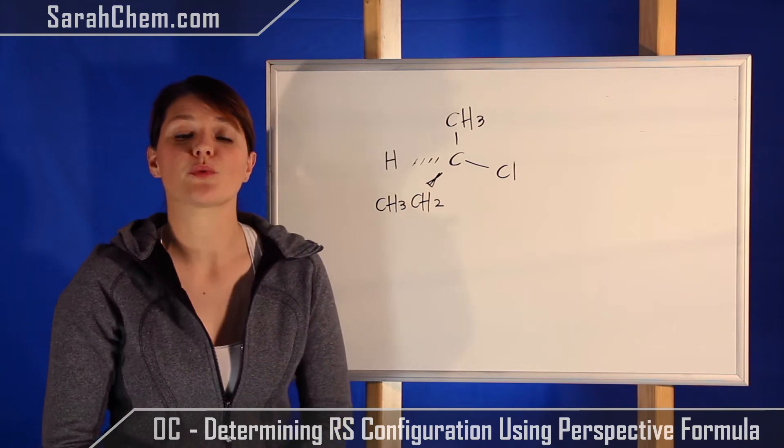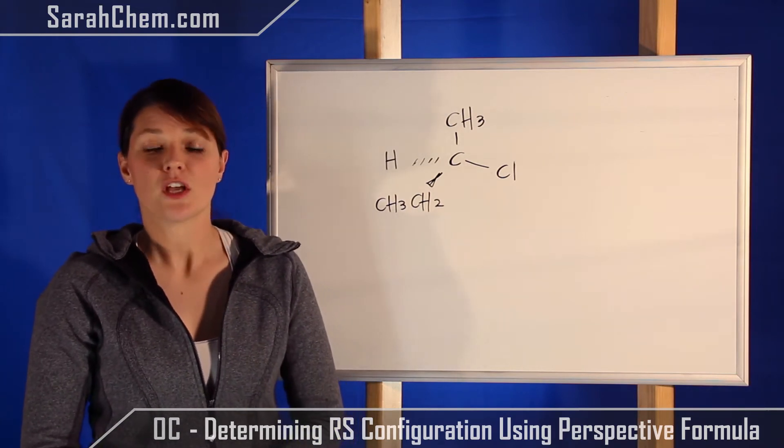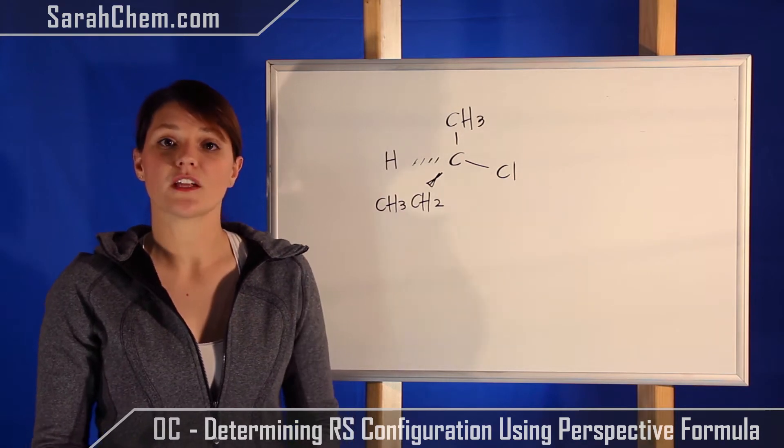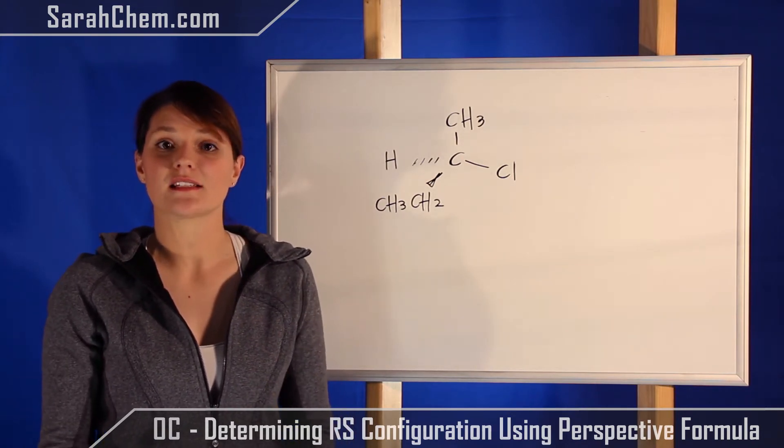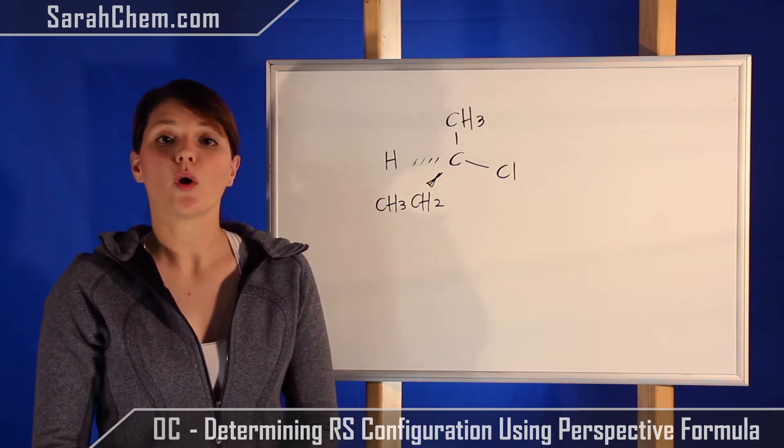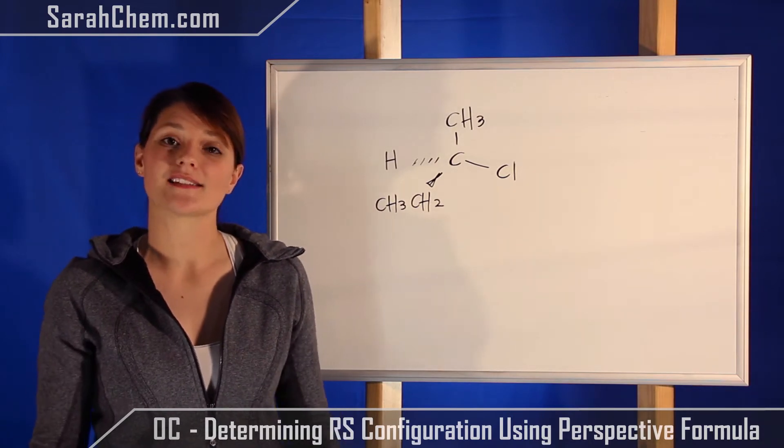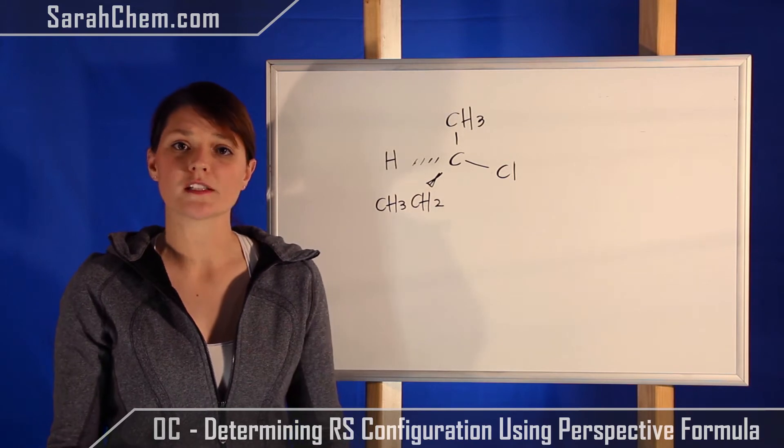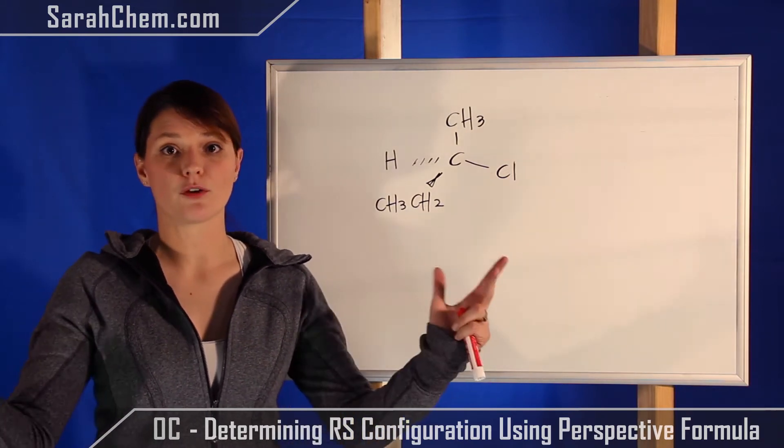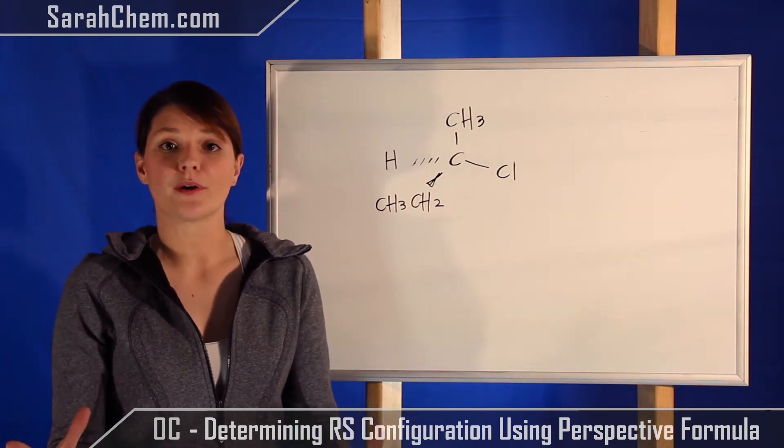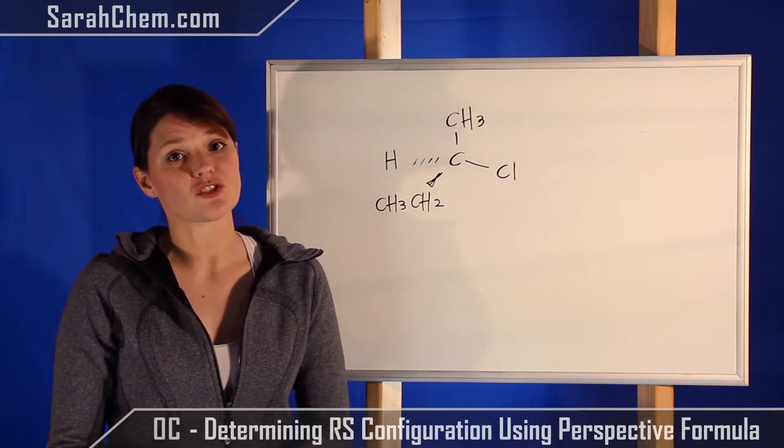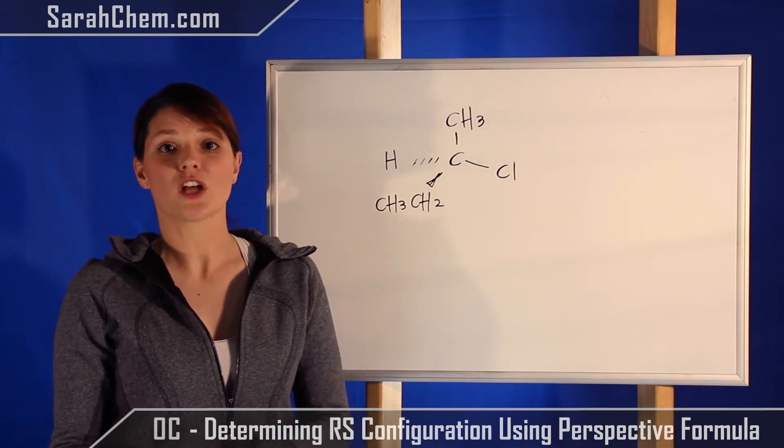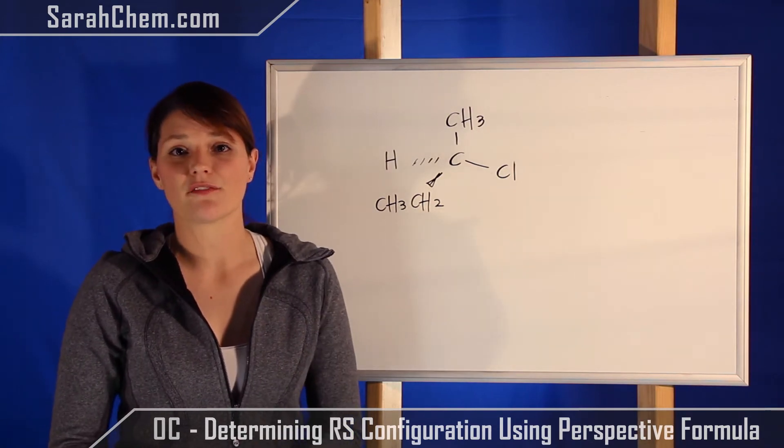So the first thing we want to do is rank the priorities of the groups. Now there are two schools of thought for how to rank priorities. One is based on the atomic number of the atom that is attached to that center, or it's based on the mass. I find some complications with mass because people then interpret that to mean the bigger the compound attached, the higher priority it is, and this can mislead you sometimes. So for me, my preference is whatever has the higher atomic number—this is the one that's going to have the higher priority.